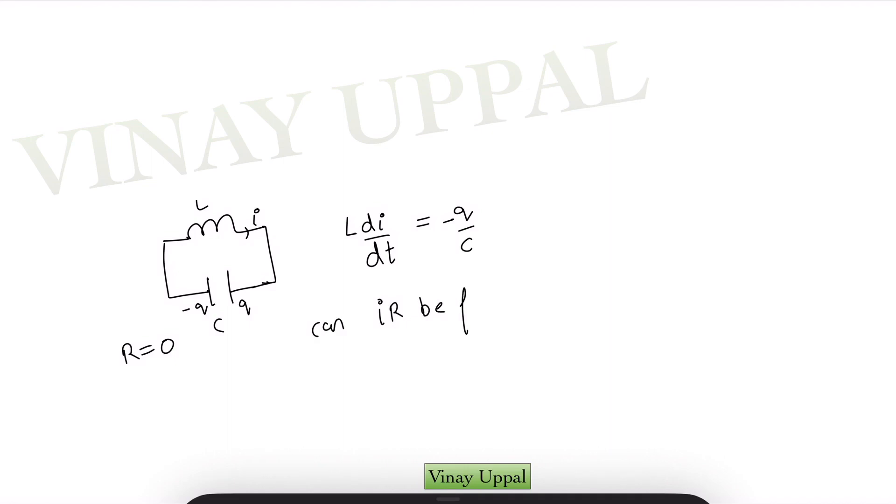So I'll leave you with one more question. Suppose I have an L C circuit where you have an inductor connected to a capacitor. So no resistance. Here I have resistance is equal to zero. So I can write the equation as L d i by d t is equal to Q by C with a negative sign. Why are we not considering the term of I R? Is I R, can I R be finite in this situation?